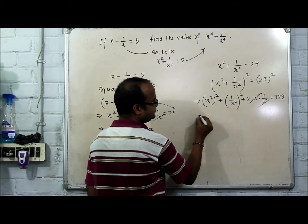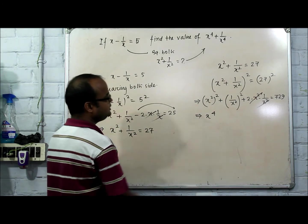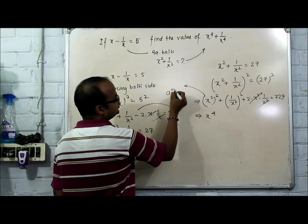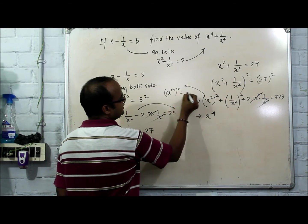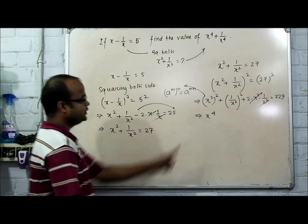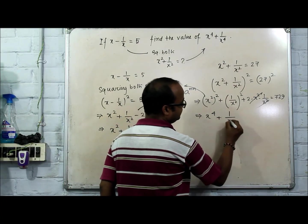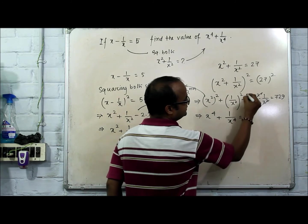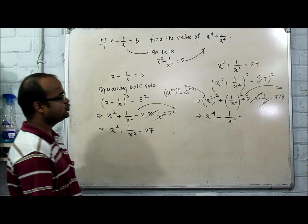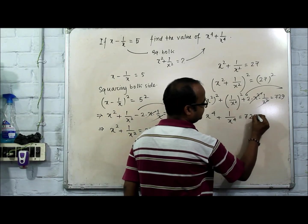The square of x squared is equal to x raised to 4, using the exponent rule: a raised to m raised to n is equal to a raised to mn, so 2 into 2 equals 4. Same way, you will get 1 upon x raised to 4. This plus 2, if we change the sign, becomes minus 2. So 729 minus 2 is 727.